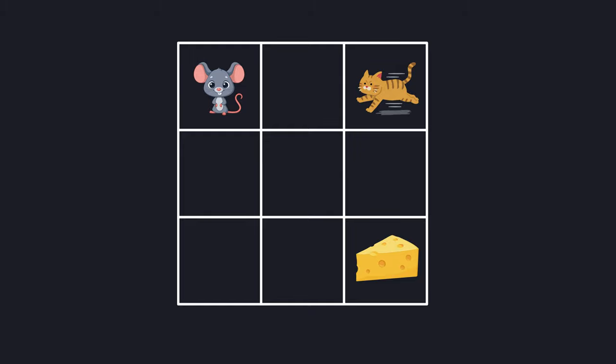Jerry, our mouse, starts at position 0,0. Tom, the cat, is at position 0,2 with reward minus 1. The cheese is at position 2,2 with the reward plus 1. All other positions have a reward of 0 and we'll use a discount factor of 0.9.